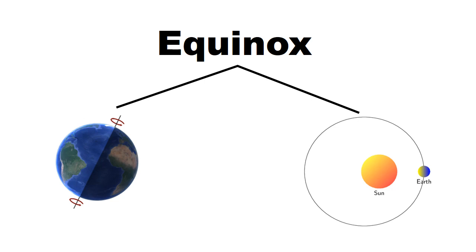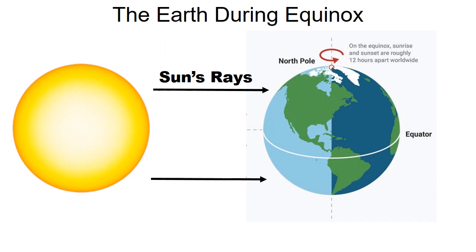An equinox is an event in which a planet's subsolar point passes through the equator. The subsolar point is an area where the sun's rays shine perpendicular to the Earth's surface — it means the sun's rays directly hit the equator.